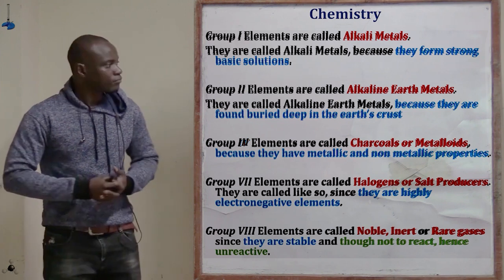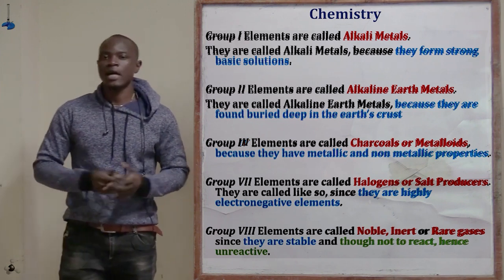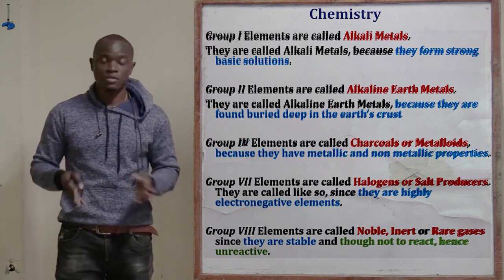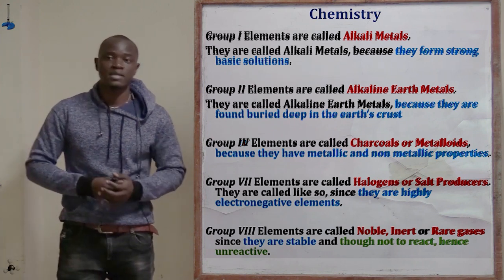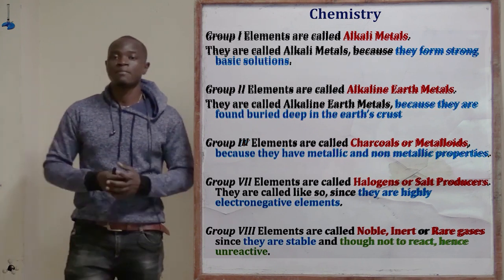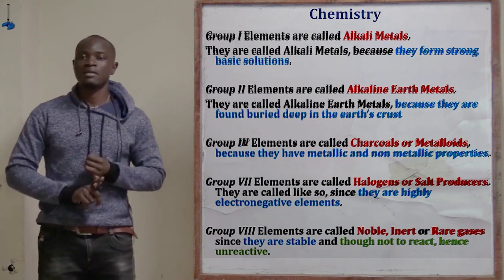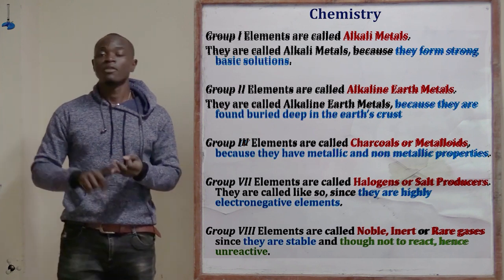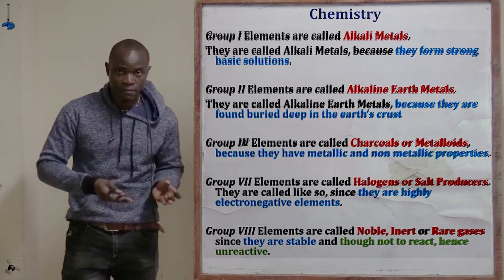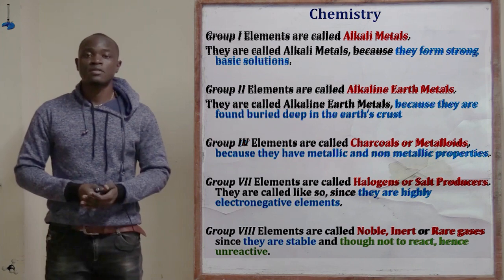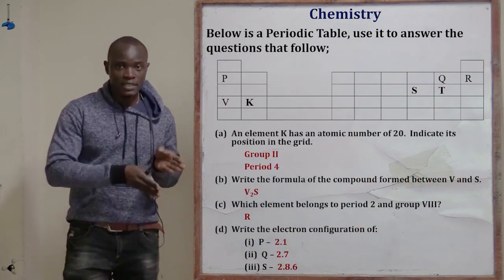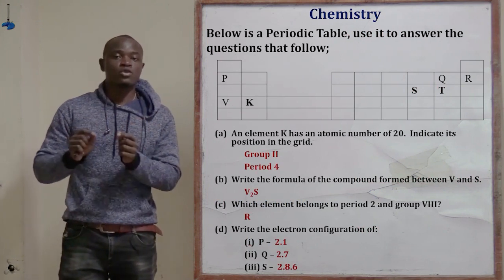Elements Q and T are called salt producers or halogens — these are group seven members. Element R is in group number eight. Group eight elements are referred to as noble gases, rare gases, or inert gases. They were first called inert gases because they were once thought not to be reactive — inert meaning unreactive.